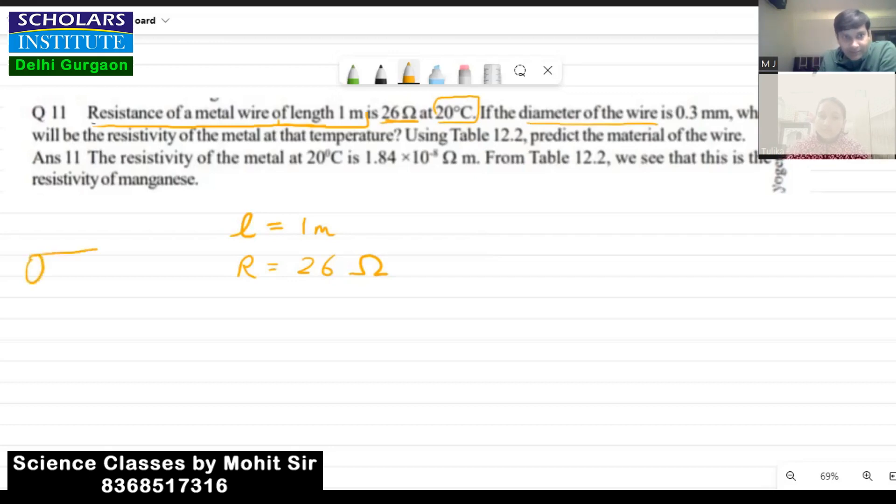Diameter of the wire which means this is the diameter, okay. So d is equal to 0.3 mm, okay. So we convert it into radius, r will be equal to d by 2, so it will be 0.3 divide by 2.